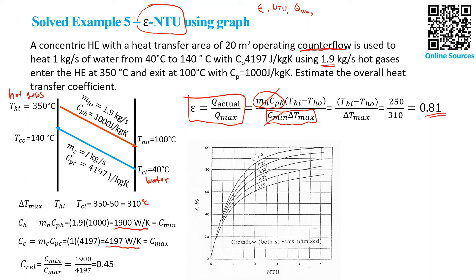We need to find NTU from the graph using the effectiveness factor and C relative. We find epsilon equal to 0.81 and C relative equal to 0.45. With these two coordinates, we find the crossing point. This line is for C equal to 0.25 and this one is for C relative equal to 0.5. It will be slightly above this line. The epsilon is 81%, so we take the straight line and find the crossing point, and we find NTU equal to 2.9.